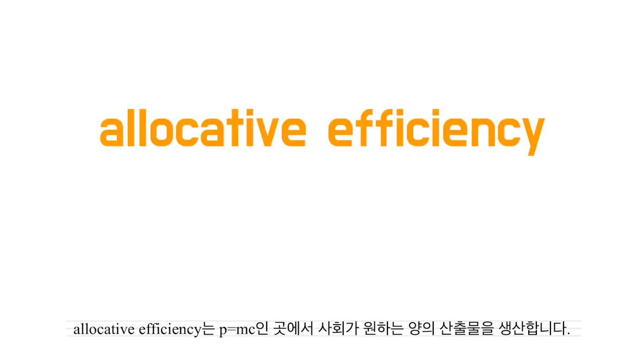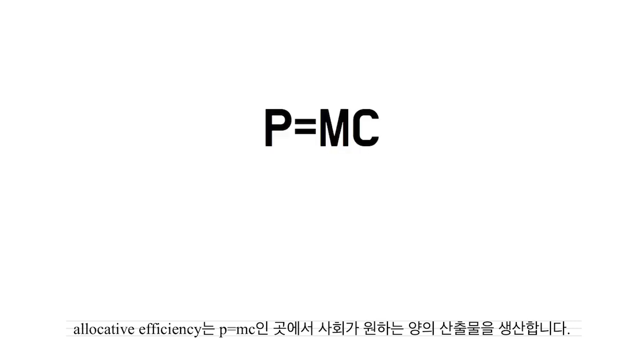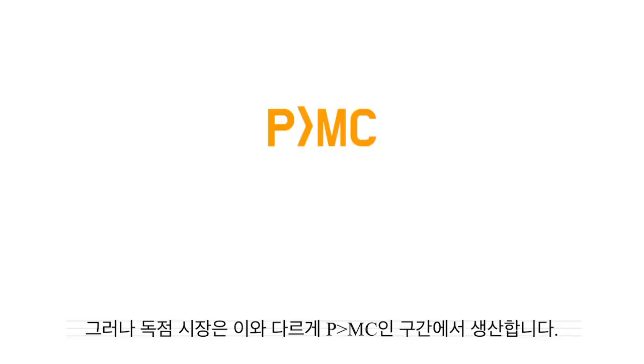Allocative Efficiency is producing the exact amount of output that society wants, where P equals MC. Monopoly, however, produces where P is larger than MC.